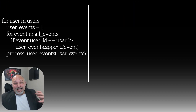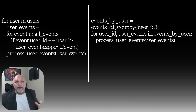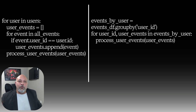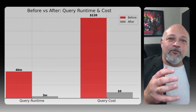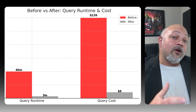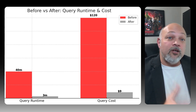One more example — here is a budget killer: the data frame disaster. This one is Python, not SQL. We're looking at a nested loop: for user in users, then for event in all events — each of the user events being processed. Here is a better way to write that: set events by user, then loop through once with the user ID and user event at the same time. You group once, process once, and that is a huge savings. The chart shows runtime dropping from 40 minutes to 3 minutes, and compute cost dropping from $120 to $9.